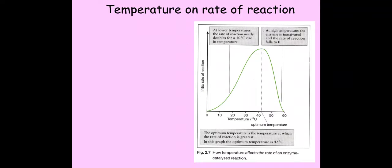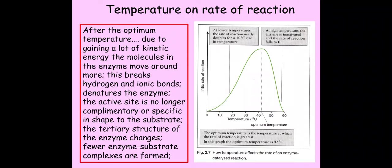Now after the optimum temperature, temperature has a different impact upon the rate and as you can see it decreases. So this is due to there being almost too much kinetic energy. So the molecules in the enzyme move around even more than they would normally or they move around too much.